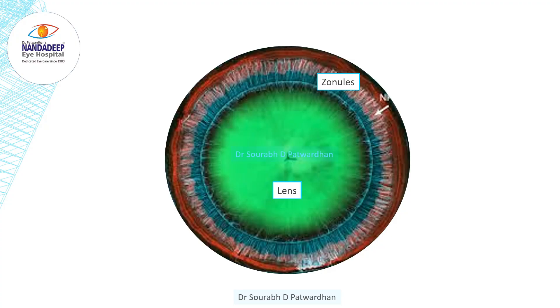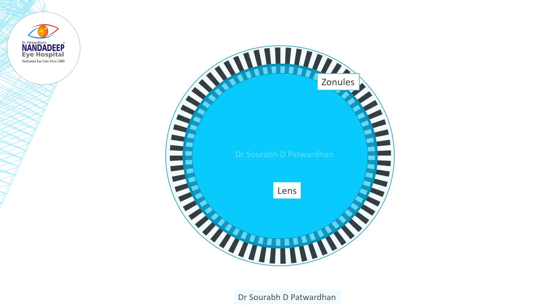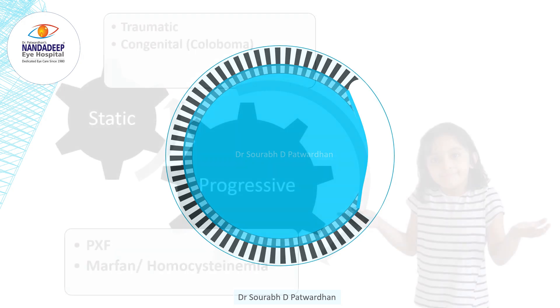This is the lens which is attached to the sclera by zonules 360 degrees. This is the schematic diagram of the lens. When we have some of the zonules absent or weak, we get a subluxated lens.